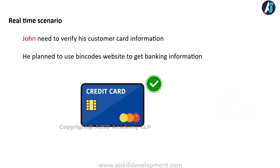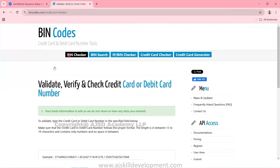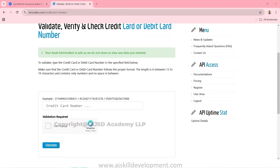Let's take another scenario. John is running his business and collecting his customers' card information for processing products he sold. He wanted to know the issuer bank for his customers. He planned to use a website called BinCode to get the banking information from his customers' credit card or debit card number. Using just the card number with the help of the BinCode website, John is able to fetch the issuer bank and all related information to cross-check that the shared card information is correct.